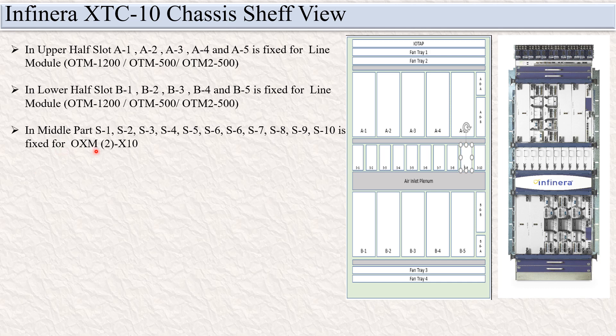In the middle part, you can see S1 to S10. S1, S2, S3, S4, S5, S6, S7, S8, S9, S10 — S1 to S10 is fixed for the OXM 2 card.